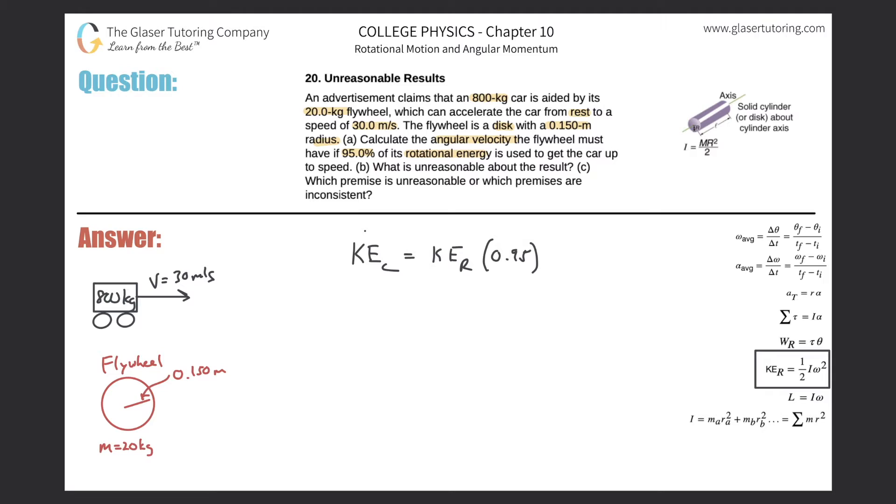Now this being set up, I can start substituting some stuff in. I can start breaking this up. That's just kinetic energy, linear kinetic energy: one half m, mass of the car, multiplied by the velocity of the car squared will equal then the rotational value, so one half moment of inertia multiplied by the angular velocity squared, that whole thing multiplied by 0.95.